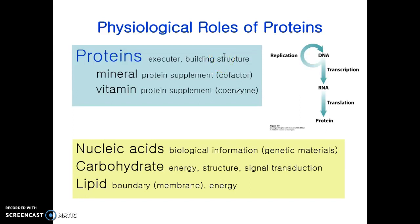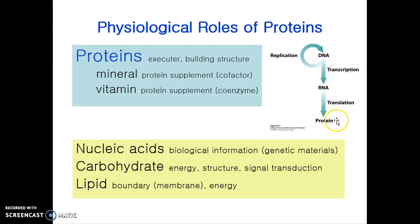The relationship between proteins and other things is briefly shown in what is called the central dogma. Basically, proteins are encoded for their information in DNA by a process called transcription and translation, and in this way proteins are made. Proteins also contain additional supplements such as minerals.